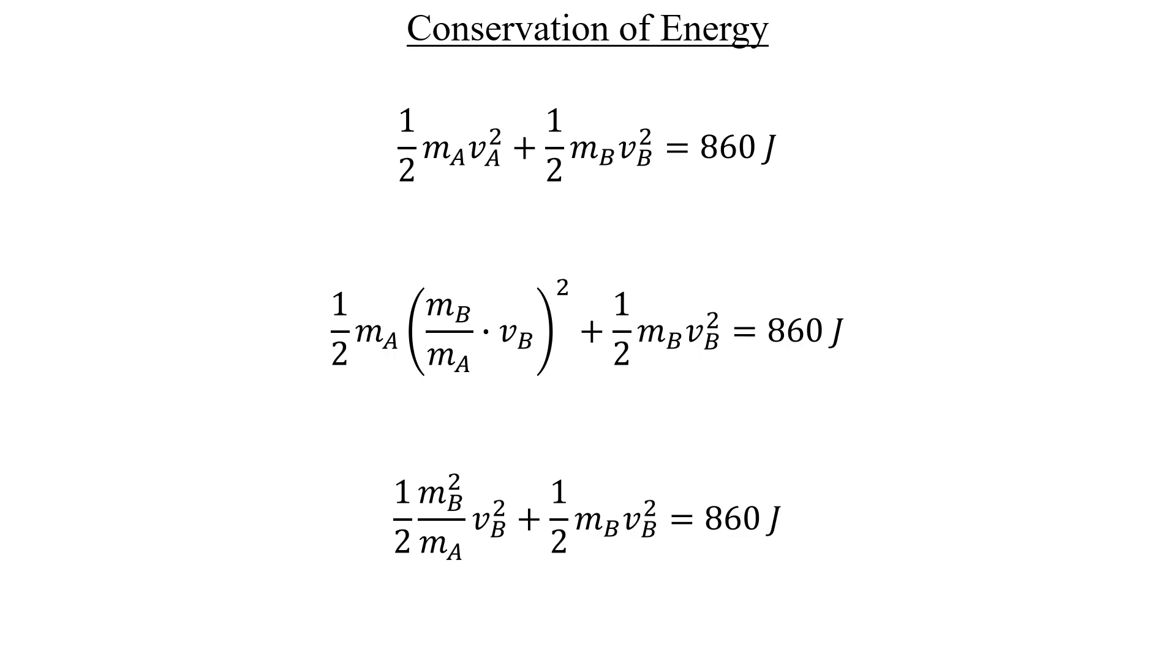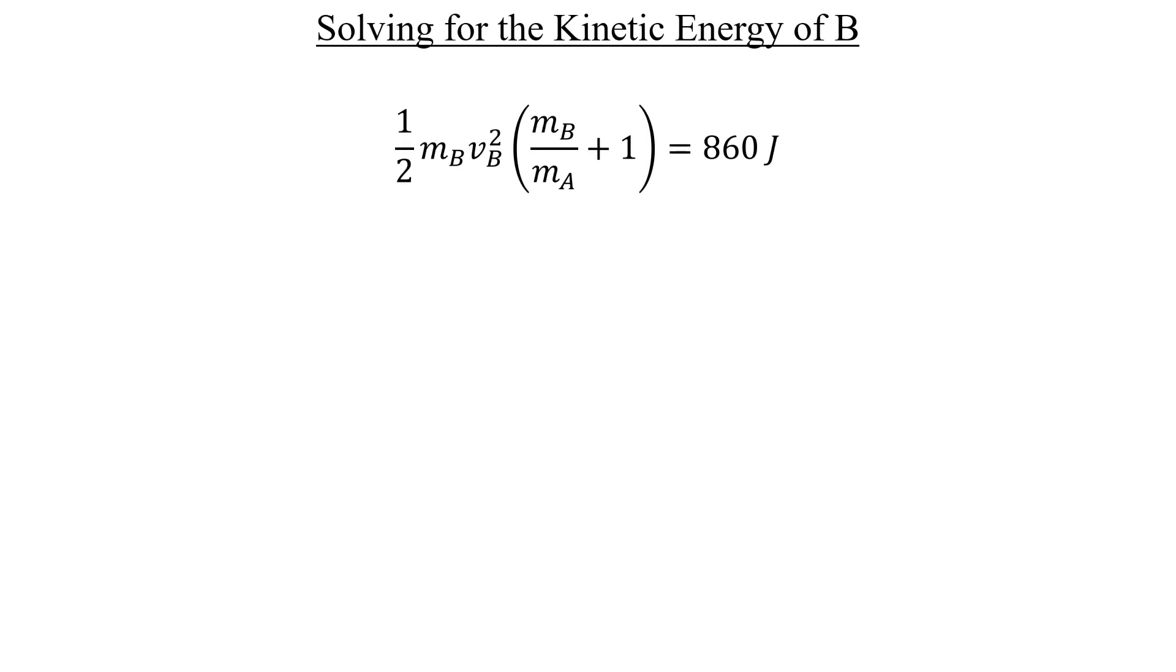From here, we can factor out the entire expression of the kinetic energy of B and then divide both sides by the leftover stuff in the parentheses.